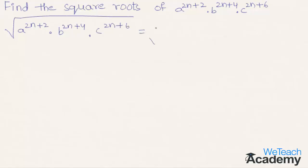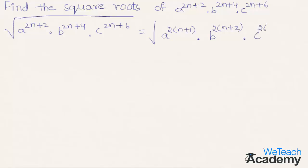We can write this as the square root of a power 2n+2, and by taking 2 as a common factor we can write it as 2 into (n+1). Similarly, b power 2n+4 can be written as 2 into (n+2), and c power 2n+6 can be written as 2 into (n+3).